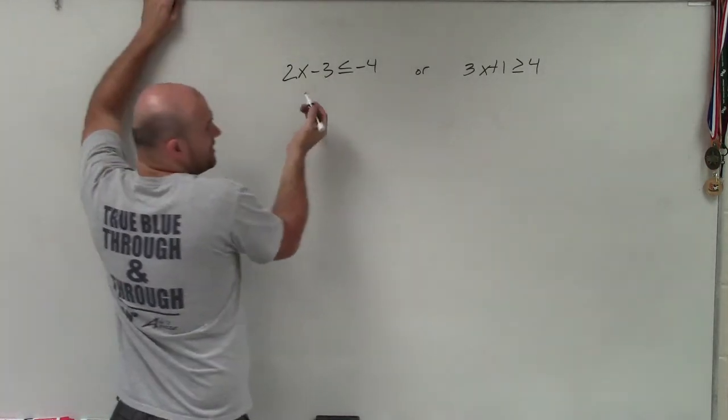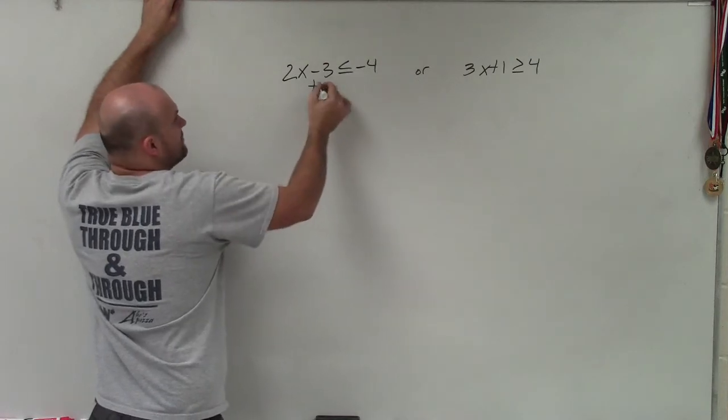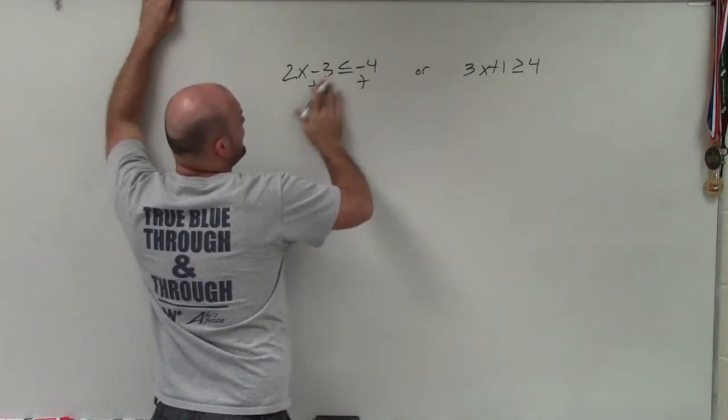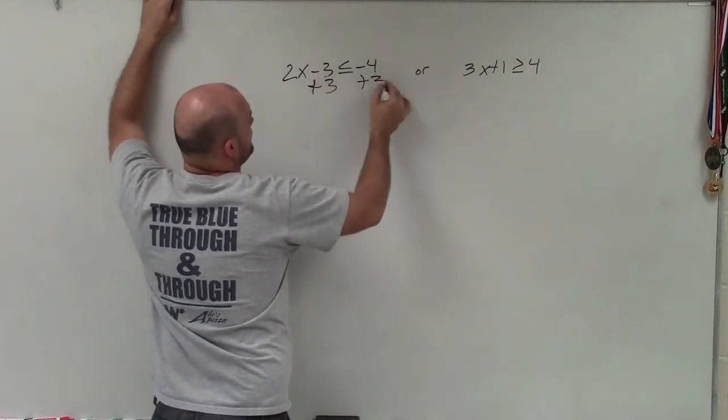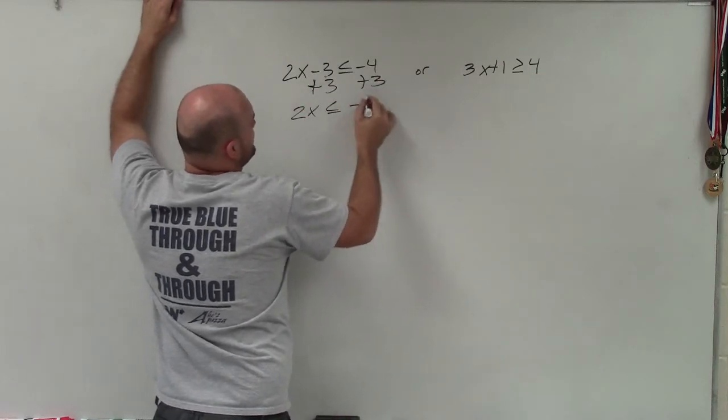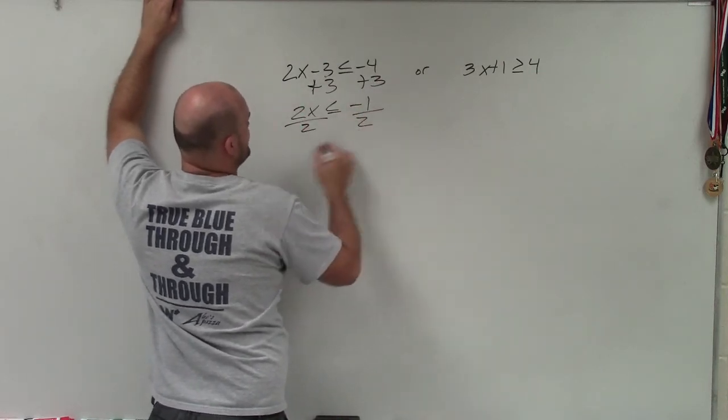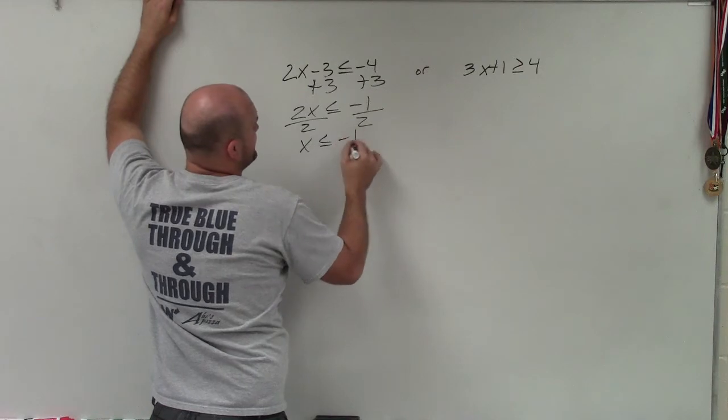So I'm going to solve them just like linear inequalities using my inverse operations. Why am I adding 2? I want to add 3. So I have 2x is less than or equal to negative 1. Divide by 2. Divide by 2. x is less than or equal to negative 1 half.